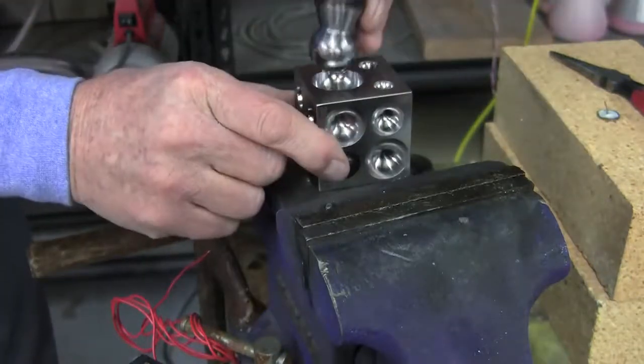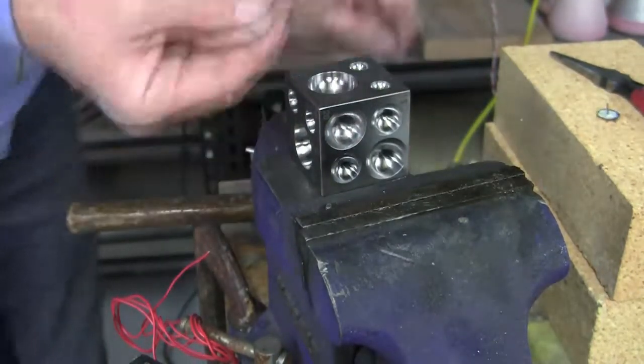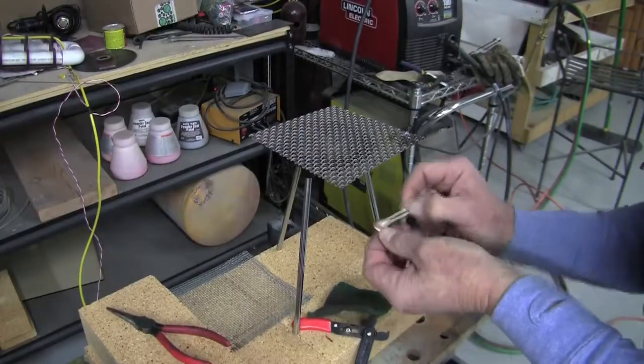And then here, I'm dropping it into a dapping block, and I'll just tap it into there to add that dome shape to it. And then you'll see that the diameters come back to about the original.